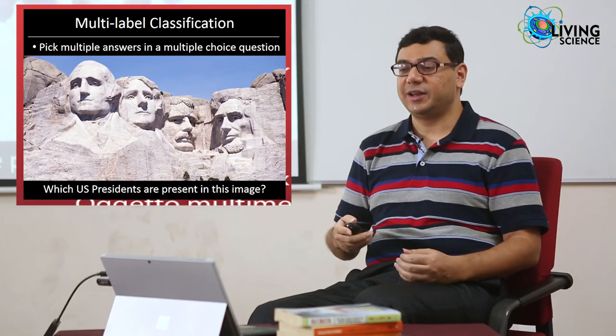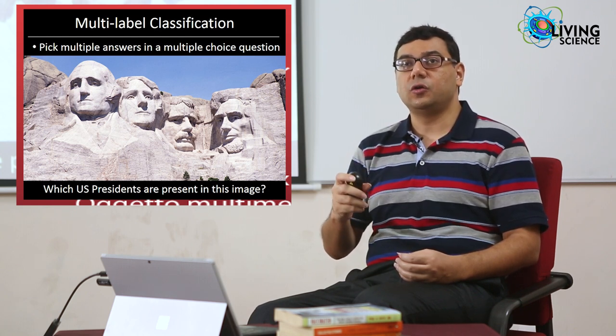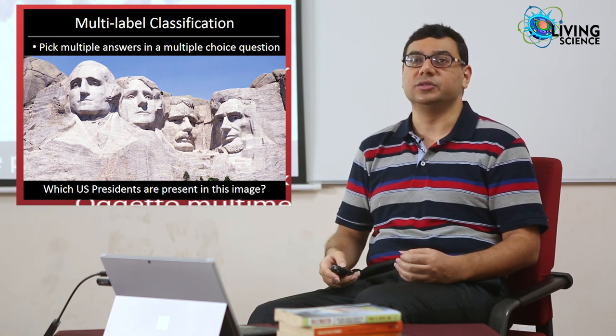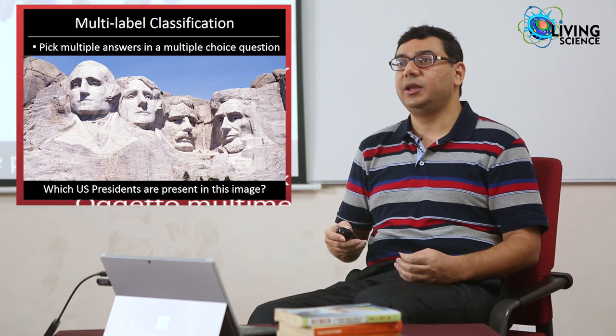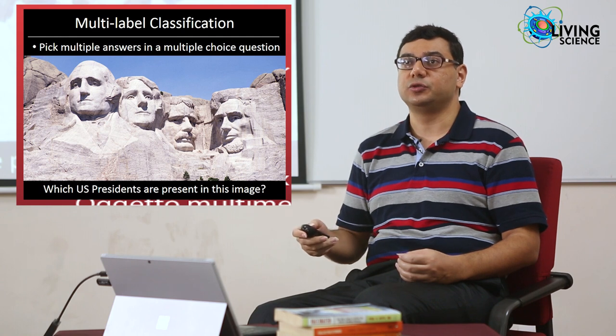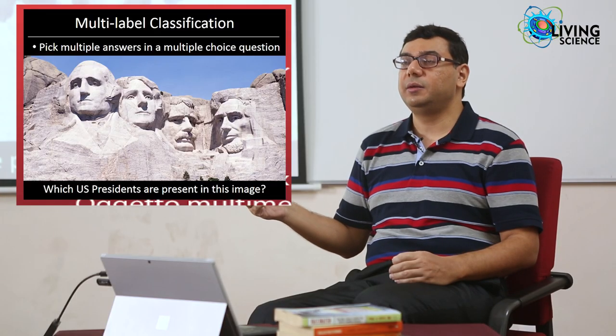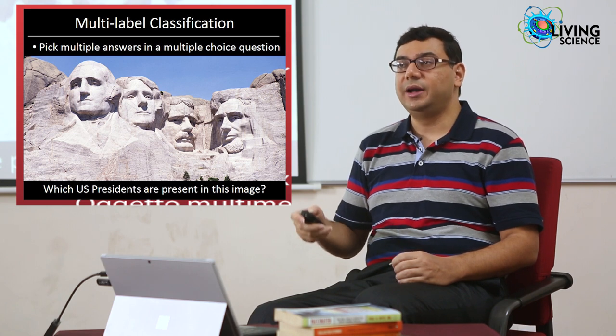The next step in the evolution of classification came when the machine learning community realized that for some high-impact applications, questions are not only multiple choice but also have multiple correct answers. This led to multi-label classification, where we learn to pick the relevant subset of choices. For instance, asking which US presidents are present in this image — from the same list of 44 or 45 choices, you must pick all relevant answers: Washington, Jefferson, Roosevelt, and Lincoln.